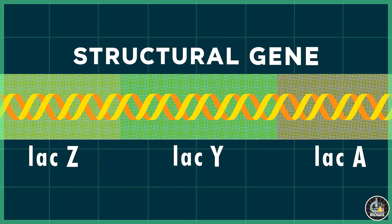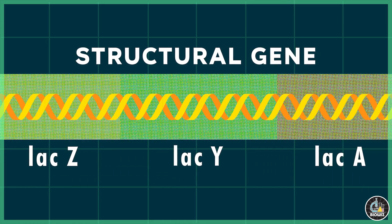And the last component is the structural gene. The three structural genes of the lac operon — lacZ, lacY, and lacA — lie adjacent to one another and are responsible for producing enzymes required for lactose metabolism.